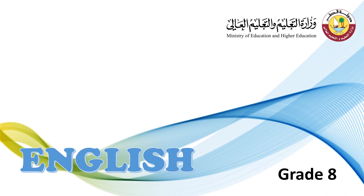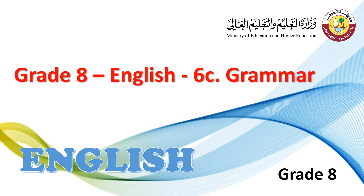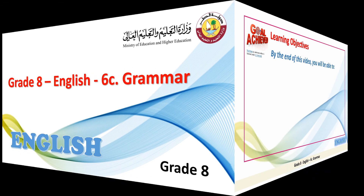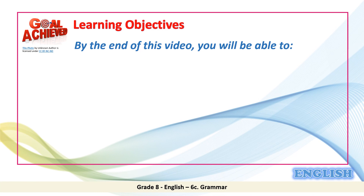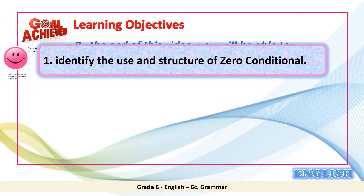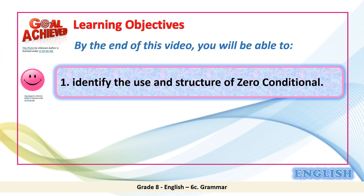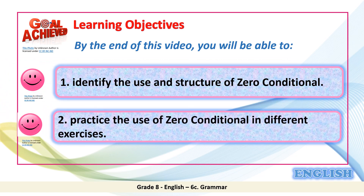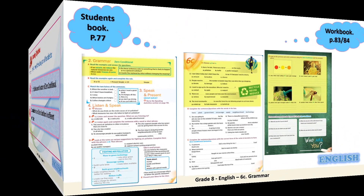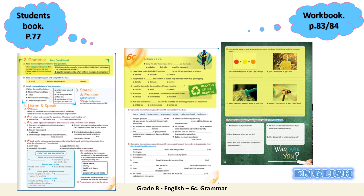Good morning grade 8 students and welcome to a new English lesson. Our lesson today is 6c grammar. Let's have a look at our two objectives for today. By the end of this video you will be able to: 1) identify the use and structure of zero conditional, and 2) practice the use of zero conditional in different exercises. Please have your students book and workbook opened on the following pages and whenever you're ready let's begin.